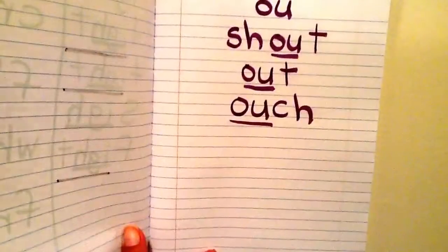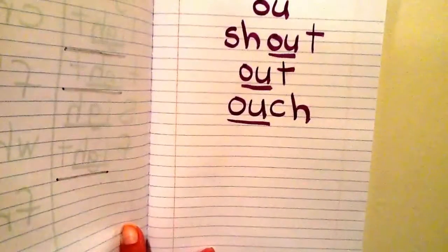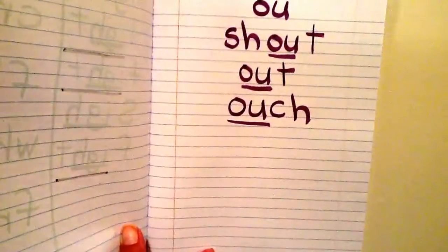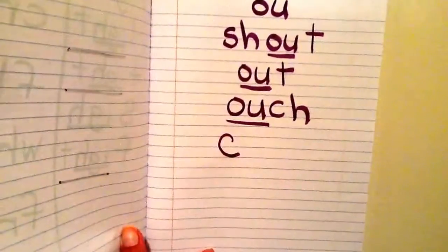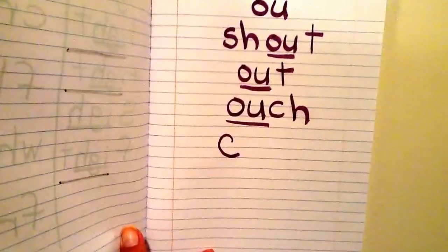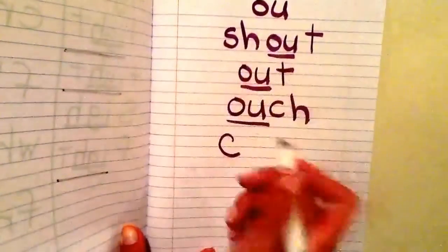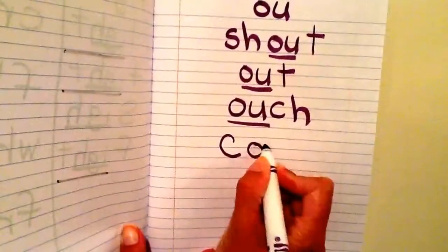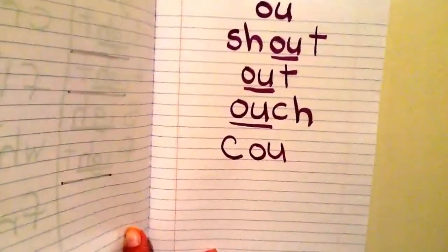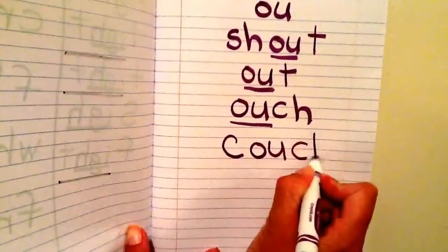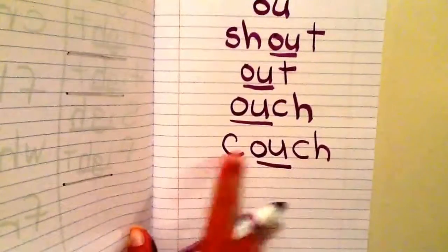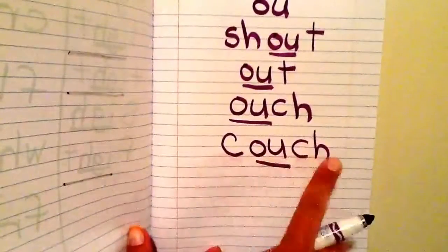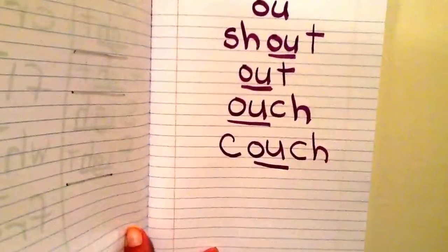Please write OUCH in your word study notebook as O-U-C-H. Another word that has OW in it is the word COUCH. I say that slowly and I hear C first — Katina Cat, that can make two different sounds — and then I hear OUCH, so I hear OU saying OW, and then I hear CH, Chelsea Cheetah again. And then I'm going to underline OU. Please write COUCH as C-O-U-C-H and underline OU in your word study notebook.